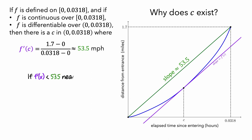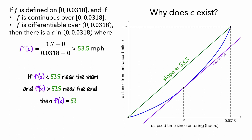If f prime of x is less than 53.5 miles per hour near the start of the elapsed time, and if f prime of x is greater than 53.5 near the end, then f prime of x must be equal to 53.5 sometime in the middle. We don't know exactly when that will happen, but we know that it will happen sometime.